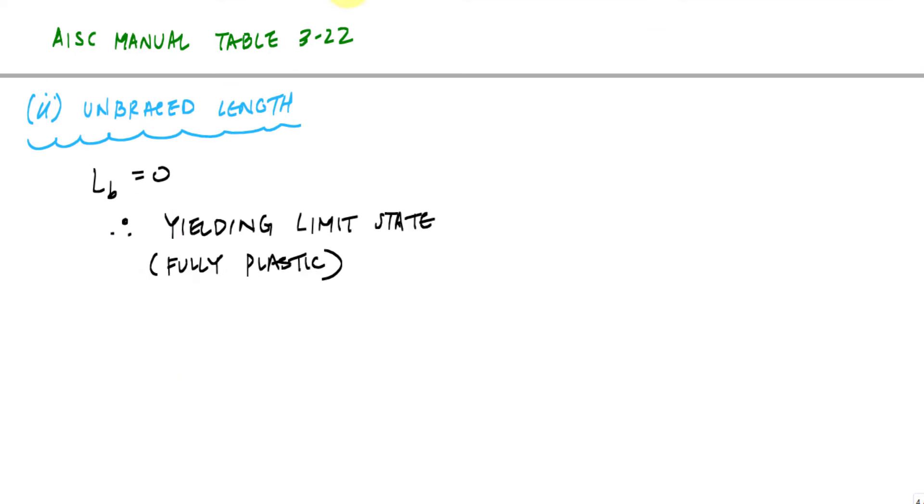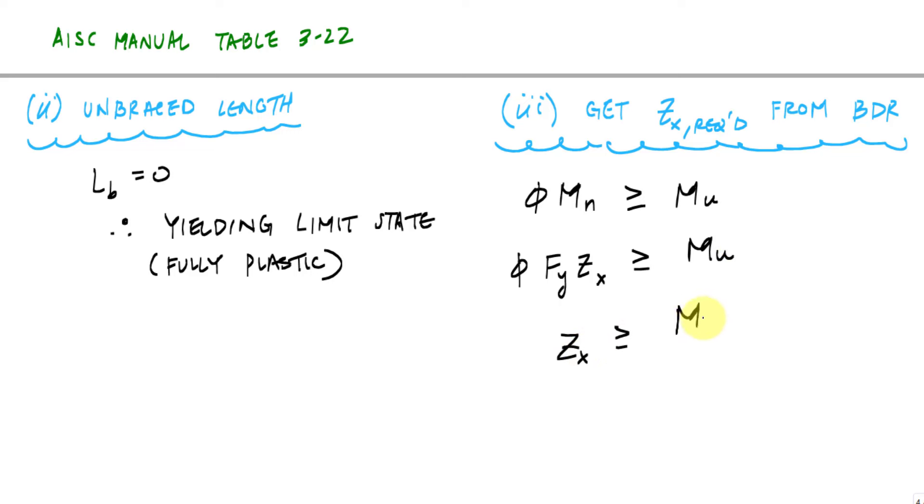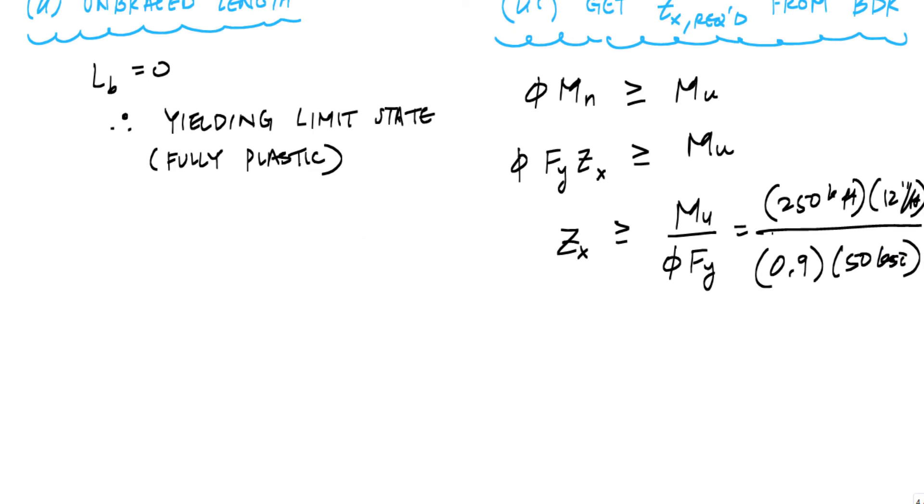So now I can use the BDR to come up with Zx required or the plastic section modulus I need. That just comes from phi Mn greater than or equal to Mu. I know my limit state is yielding, so that means my nominal moment is Fy times Zx. This Zx is going to be greater than or equal to Mu over phi Fy. This would be 250 kip feet times 12 inches per foot divided by 0.9 for flexure and 50 KSI. Whatever Zx we choose is going to be greater than 66.7 inches cubed. This is Zx required.